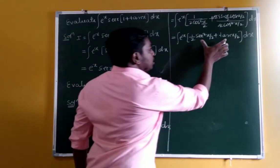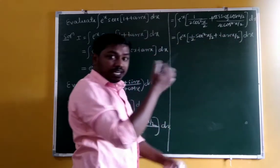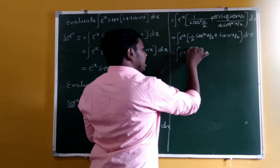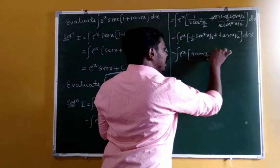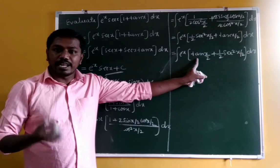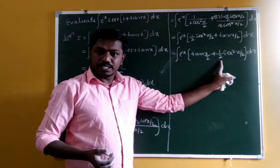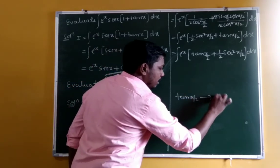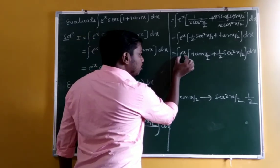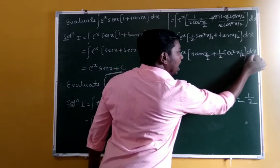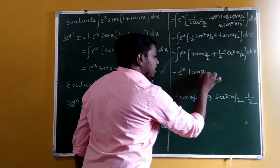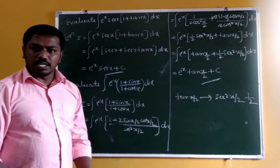By commutativity of addition, rewrite as: integration of eˣ · [tan(x/2) + (1/2)sec²(x/2)] dx. The derivative of tan(x/2) is (1/2)sec²(x/2). So f(x) = tan(x/2) and f'(x) = (1/2)sec²(x/2). Applying the formula, the answer is eˣ · tan(x/2) plus integration constant.